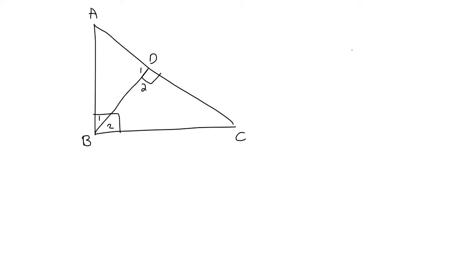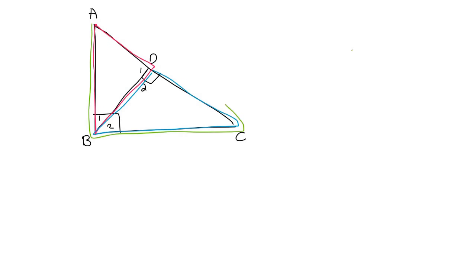Now, if I had to ask you how many triangles you can see — some students would say 1, some would say 2, but the correct answer is that there are 3. There's this pink one over here, there's this blue one over here, and then of course there's the big green one. So there are 3 different triangles.